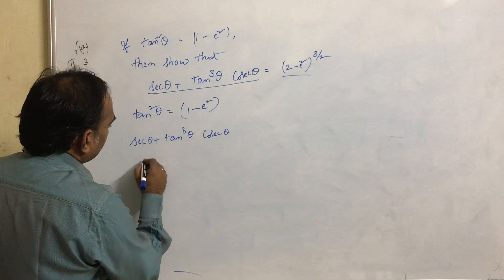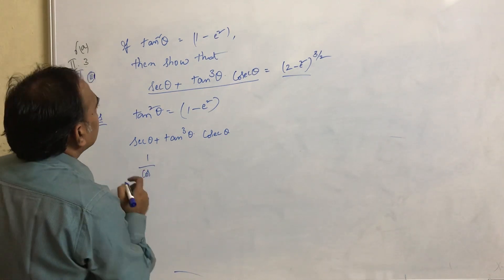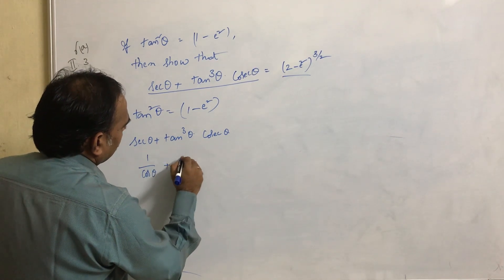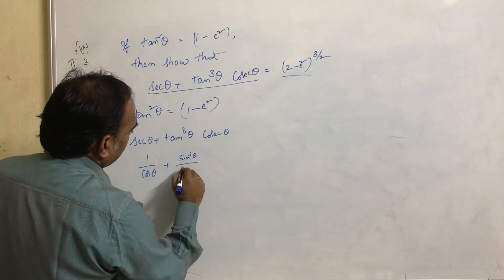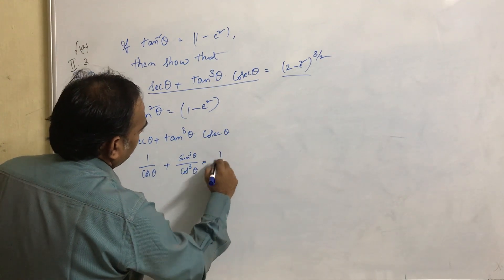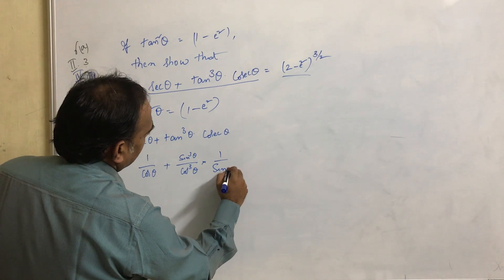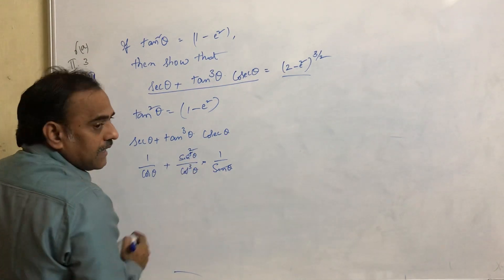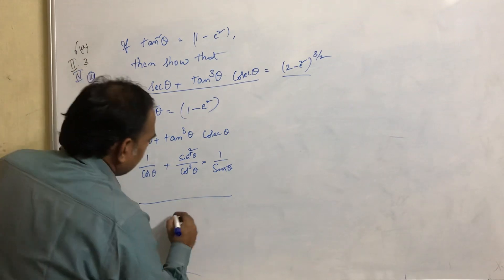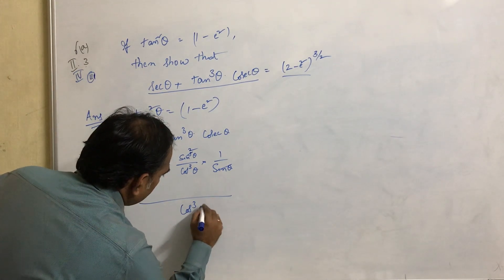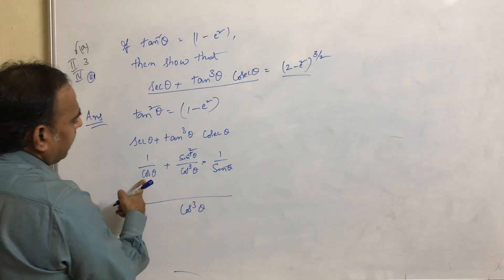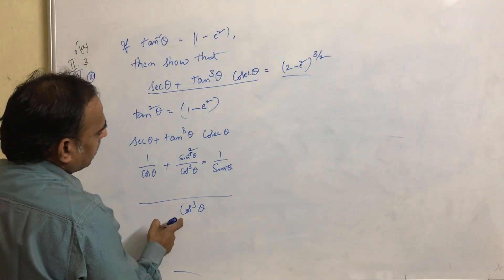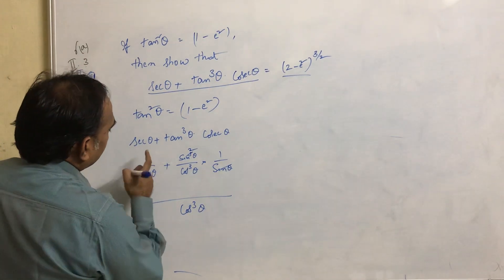How can we simplify? Secant theta can be written as 1 by cos theta, plus tan cubed theta can be written as sin cubed theta by cos cubed theta, into 1 by sin theta. The sin theta cancels with one sin theta. Now what is the LCM? Cos cubed theta.